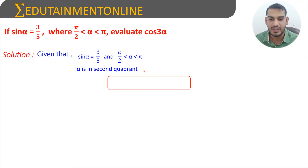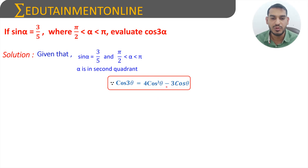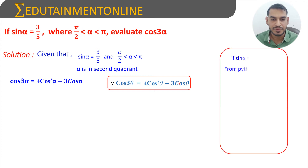We know that cos 3θ equals 4cos³θ minus 3cosθ. Since cos 3α is in the form of cos 3θ, we can write it as 4cos³α minus 3cosα. Now we will find the value of cos α.